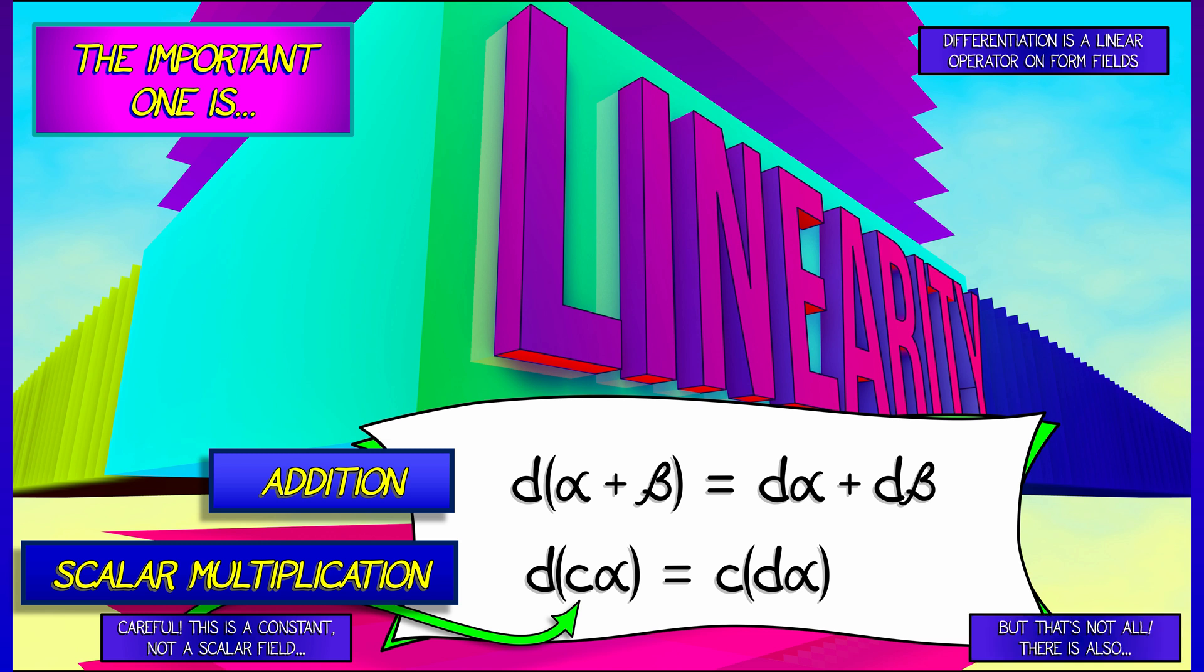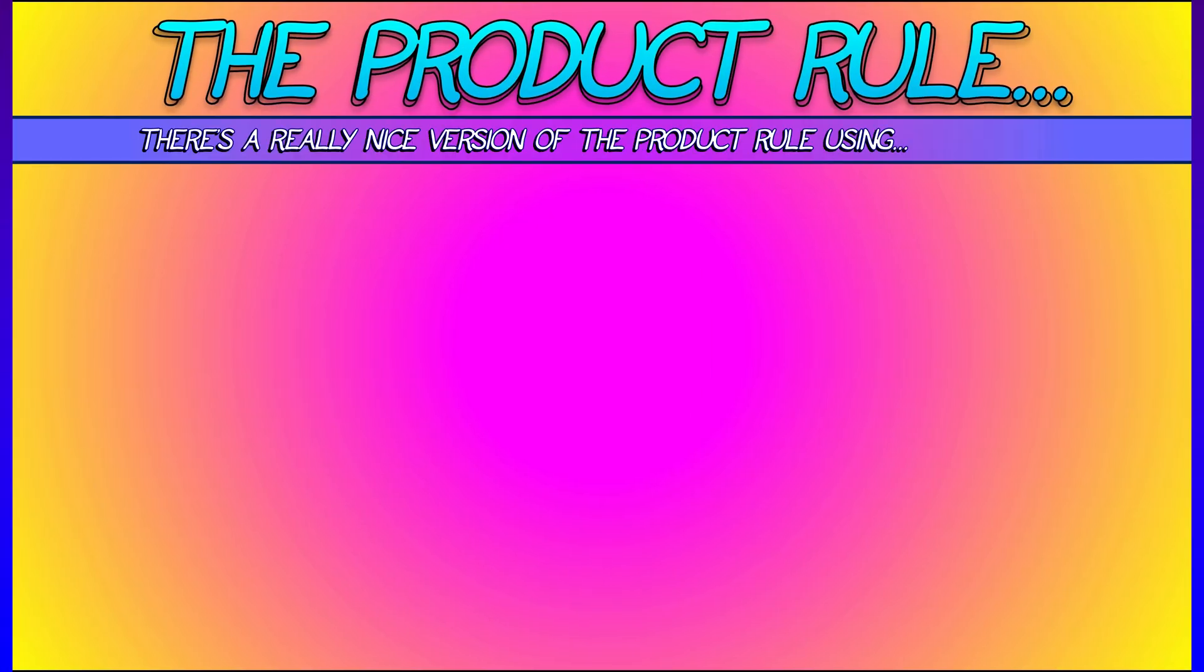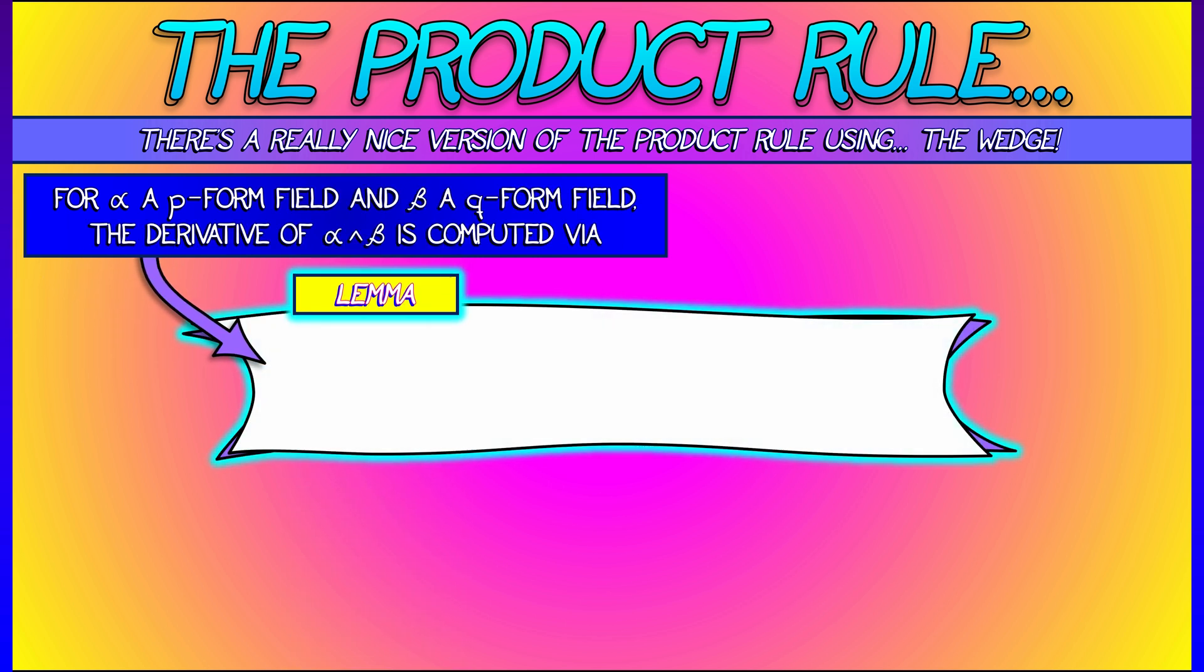But that linearity is not the only differentiation rule. There's also something like a product rule for derivatives, a really nice product rule that uses the wedge product on forms. So let's say that you've got alpha, a p-form field, and beta, a q-form field, and you want to know the derivative of alpha wedge beta. Then, the lemma is that this is really equal to the derivative of alpha wedge beta plus negative 1 to the p times alpha wedge d beta.